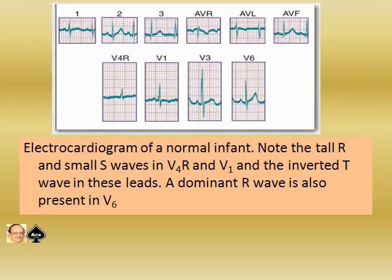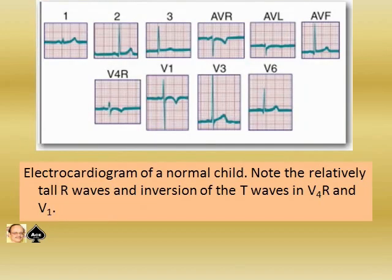The electrocardiogram of a normal infant is shown here — please see the picture carefully. Note the tall R and small S in V4R and V1 and the inverted T in these leads. The dominant R-wave is also prominent in V6. The ECG of a normal child is also shown here. Note the relatively tall R-wave and the inversion of the T-wave in V4R and V1 again. These are all normal.